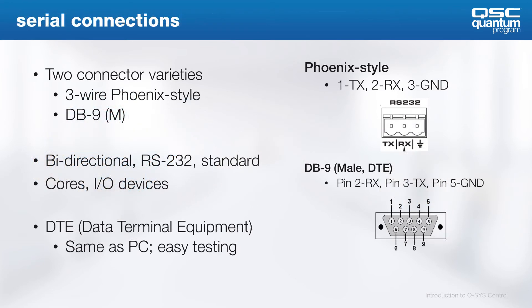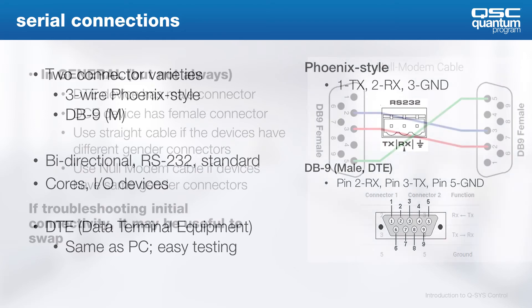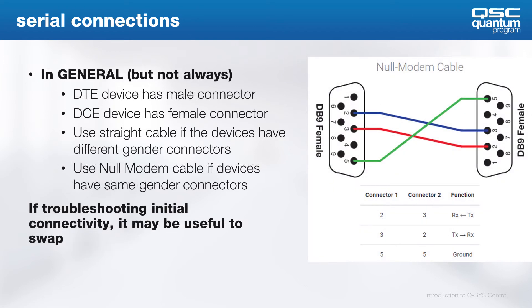With serial connections, QSYS provides bi-directional RS-232 ports on either a Phoenix connector or a DB-9-style connector, just like the data terminal equipment or DTE connection on a PC. If your design requires a different type of serial connection, such as RS-485 or RS-422, then we typically recommend you go with an Ethernet-based third-party control device. Serial connections on IO-22s and most QSYS cores have a DB-9 male DTE connector. When connecting a DCE device with a female connector, a male-to-female straight-through cable can be used.